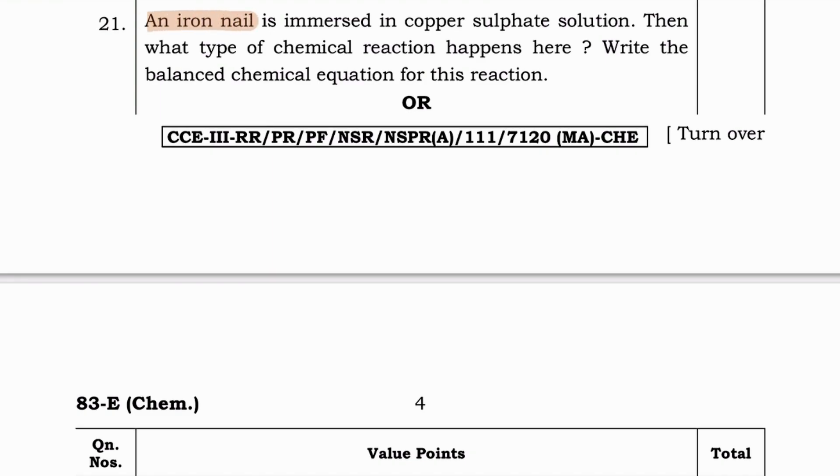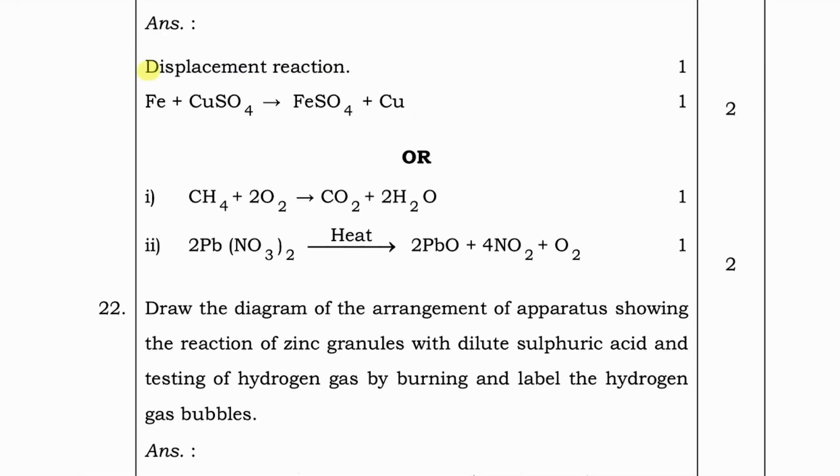An iron nail is immersed in copper sulfate solution. Now, what type of chemical reaction happens here? Write the balanced chemical equation for this reaction. Answer. Displacement reaction. Fe plus CuSO4 gives FeSO4 plus Cu.